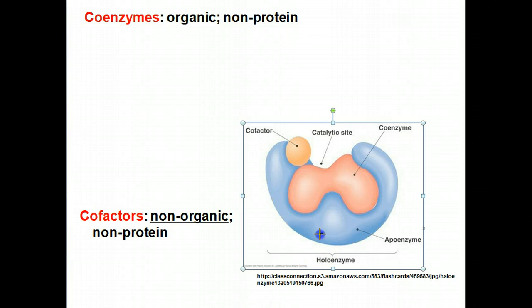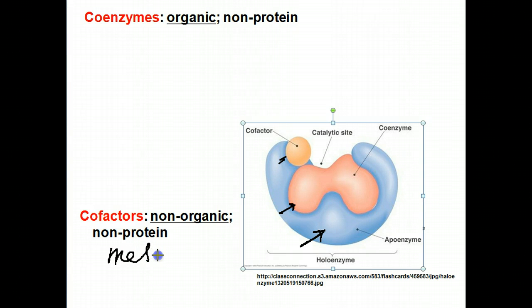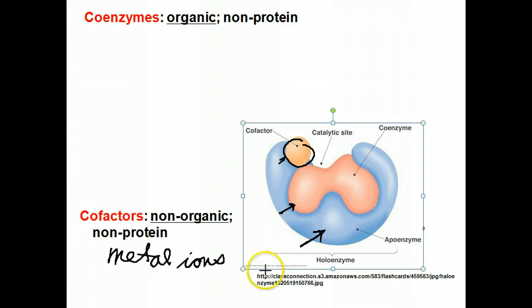This large protein is going to interact with non-protein molecules to fill in the void so that the active site can be formed. Coenzymes are organic in nature because they're going to have some carbon atoms, but they're not going to be proteins. Cofactors are non-organic — there won't be any carbon atoms in them. They're usually going to be metal ions in nature — things such as calcium, magnesium, manganese, which all have a double positive charge. There'll probably be a negative charge on the enzyme that allows the cofactors to bind to and fill in that void.